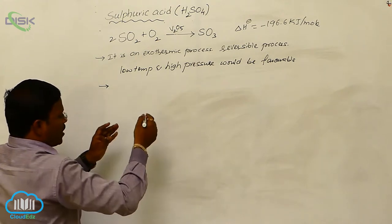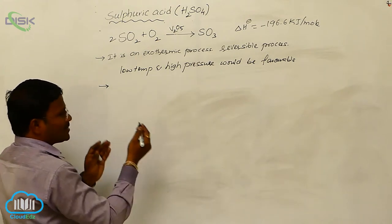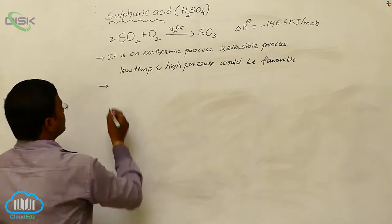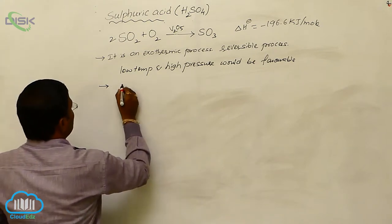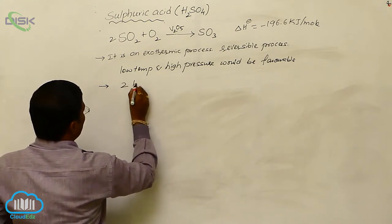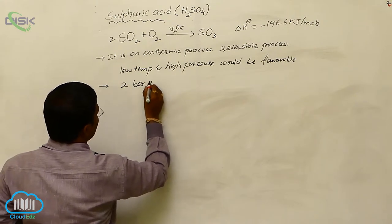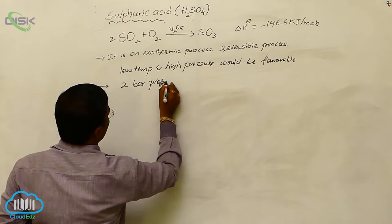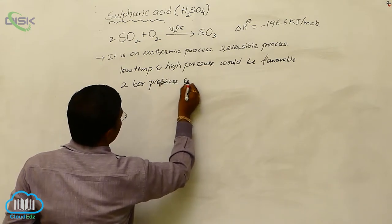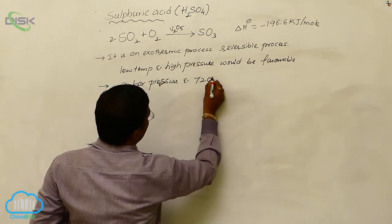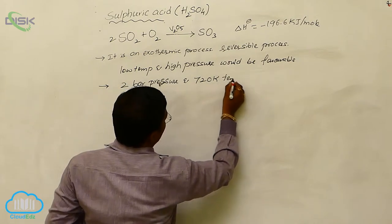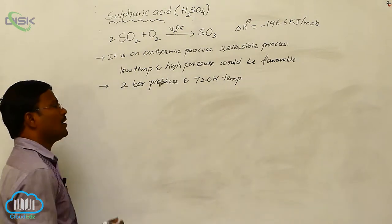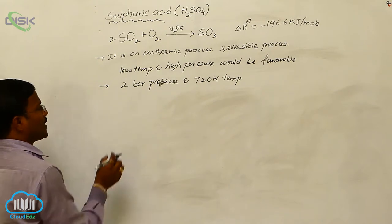During the preparation of concentrated sulfuric acid from this method, the usual conditions are 2 bar pressure and 720 Kelvin temperature, which are favorable for the preparation of concentrated sulfuric acid in the contact process.